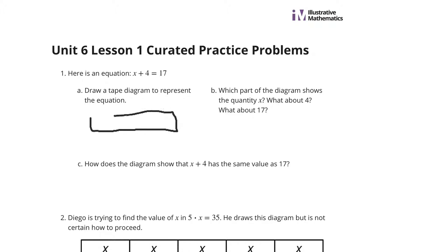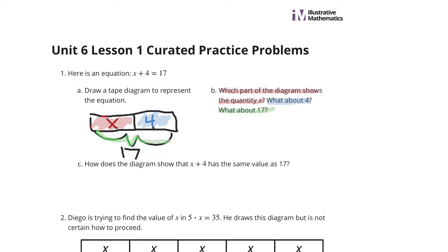First, just draw a rectangle-ish thing here. We have x and we have 4, and then together they're going to be a total of 17. Which part of the diagram represents the quantity x? That's this part here. What about 4? That's this part there. And what about 17? That's this part here.